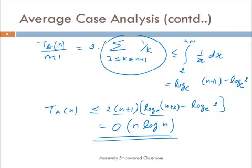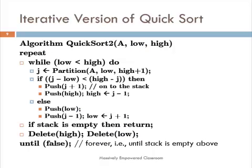The worst case is O(n²), but what really matters in practice is the average case. We can make further improvements by eliminating recursive calls using an iterative version of quicksort, but doing so requires a stack whose size should be of the order of 2 log n.